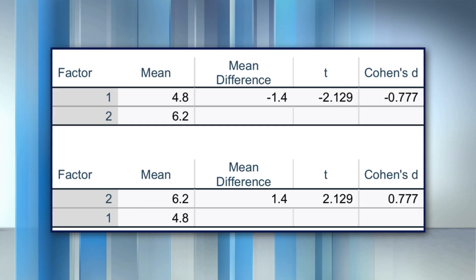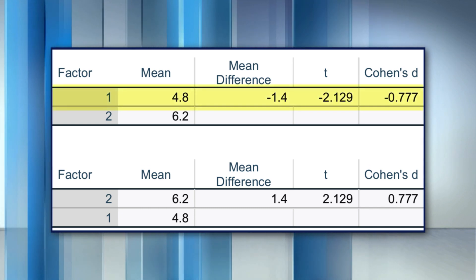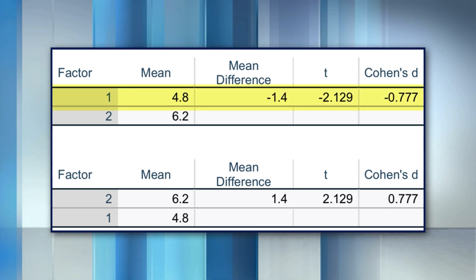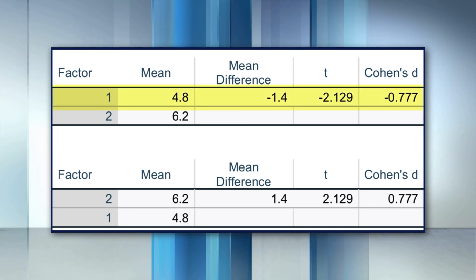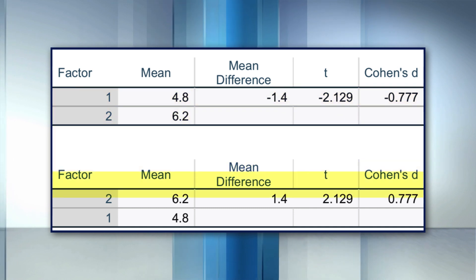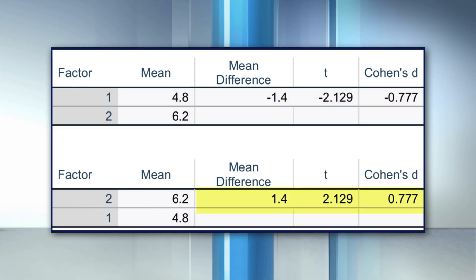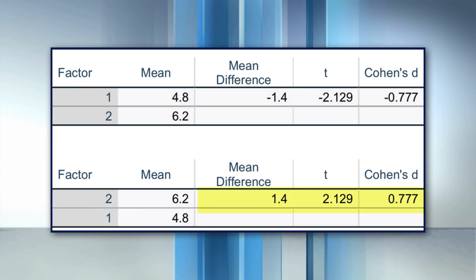except for the negative sign. The only reason one t-value was negative and the other was positive was the order that I entered the groups. If the first group has a lower mean, the t-test will be negative. If the second group has the lower mean, the t-test will be positive.